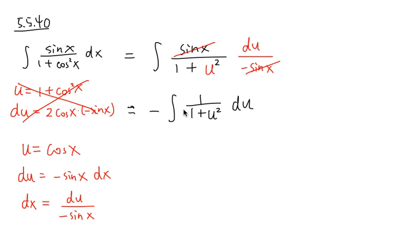And now you have to think about the derivative of what function will give you 1 over 1 plus u squared. And the answer to that is the inverse tangent x, or the inverse tangent u. So this integral will be negative the inverse tangent. And we're using u here, so we'll have u right here.